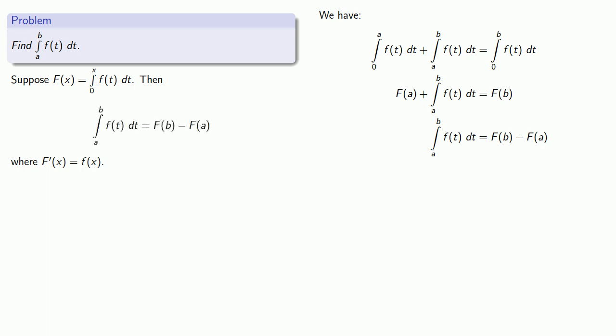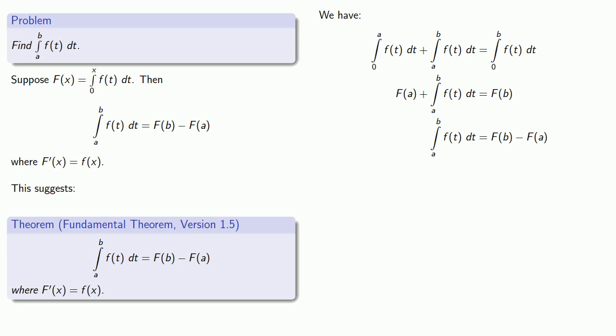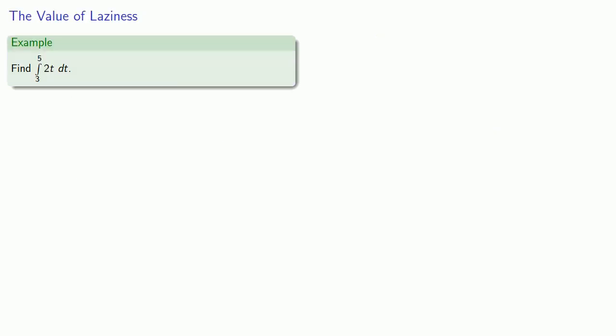And this gives us a new version of the fundamental theorem of calculus. To find the definite integral from a to b, find an antiderivative of f of t and evaluate it at the end point and find the difference. Of course, this leaves the problem of finding the correct antiderivative. So let's consider another problem.